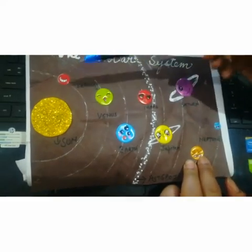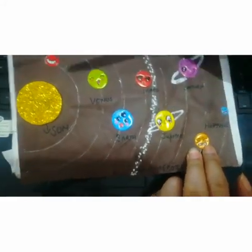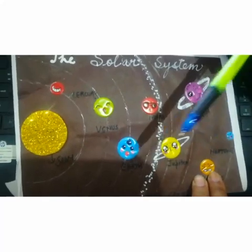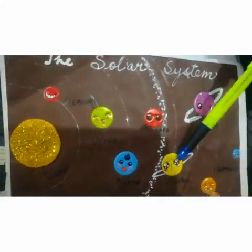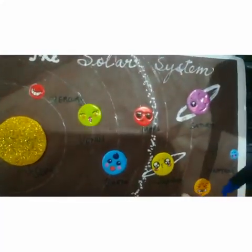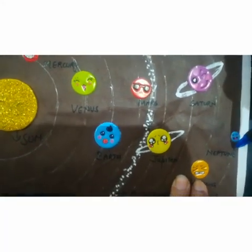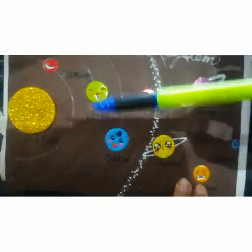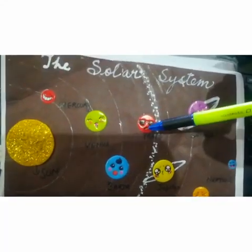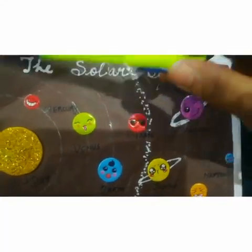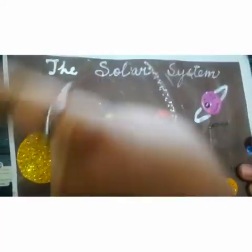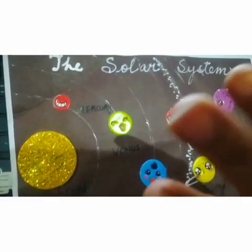There are eight planets: Mercury, Venus, Earth, Mars, Jupiter, Saturn, Uranus, and Neptune. All eight planets of the solar system move around the sun in a fixed path — they do not move here and there but move in a fixed elongated path.